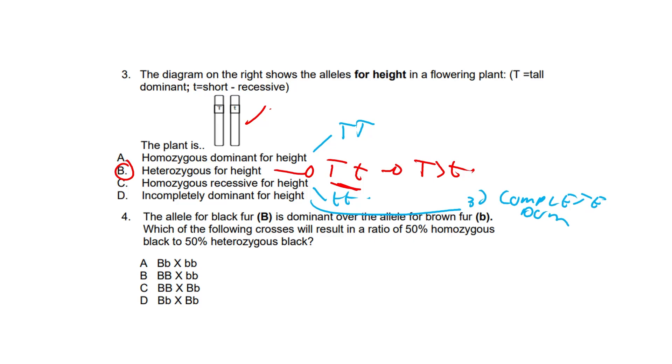Question four. The allele for black fur, capital B, is dominant over the allele for brown fur, small b.